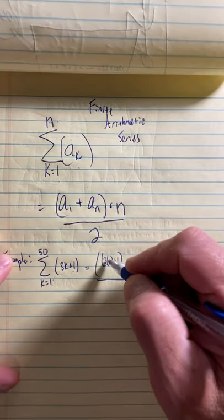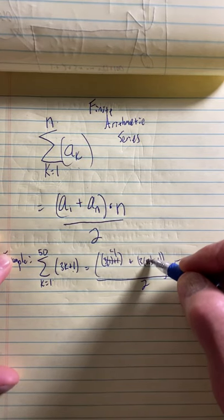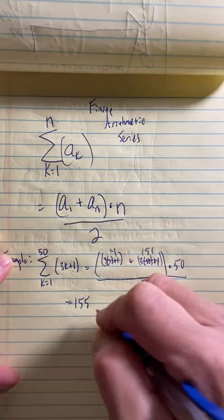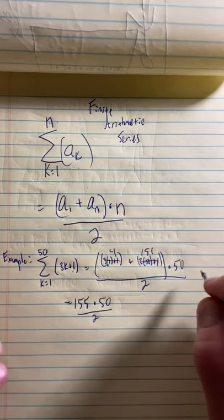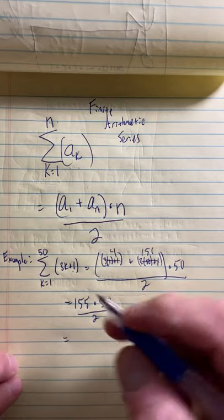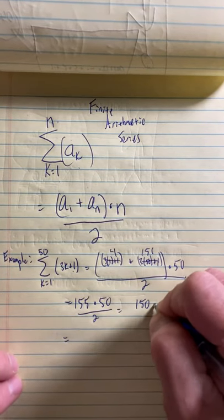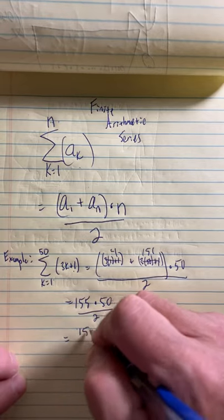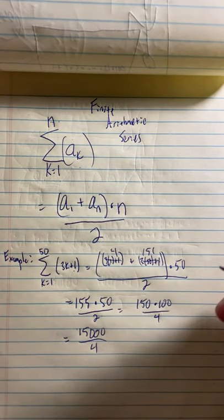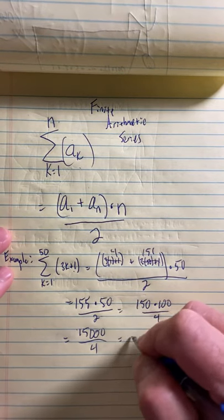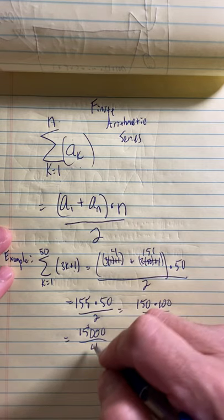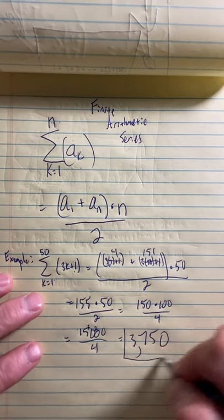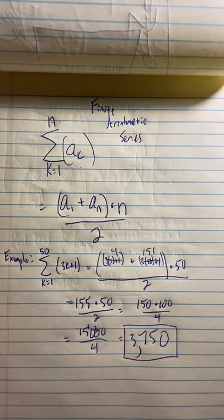So using this formula what does this turn out to be? 3 plus 1, so that's 4. And then 3 times 50 is 150 plus 1 so 151. So what do we have? We have 155 times 50 over 2. I'm gonna make that times 100 over 4. All I did was multiply this top and bottom by 2 so that I can just do the whole trick of 150 and then add two zeros. But now I have to divide by 4 instead of 2. But 4 goes into 15 three times because 4 times 3 is 12 with remainder 3. It goes into 37 nine times with remainder 2. It goes into 25 six times and then there's another zero. So it adds to 3750.